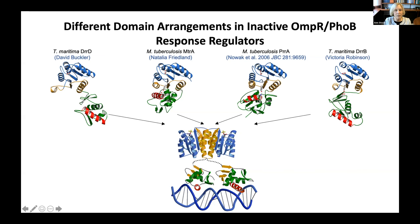Where interfaces exist, they all involve the alpha-4, beta-5, alpha-5 face of the receiver domain, but the surface interacts with different surfaces of the DNA binding domains. Interestingly, in proteins with interfaces, the interdomain interaction is stabilized by a hydrogen bond forming a latch between the conserved tyrosine switch residue in the receiver domain and either an aspartate or an asparagine in the DNA binding domain. However, because of the different orientations of the DNA binding domain, it is a different residue that partners with the conserved tyrosine in each protein, located on a different element of secondary structure. We hypothesize that the different domain arrangements provide different levels of basal transcription activity and that different domain interface arrangements provide different strength switches between off and on states, optimized for the specific needs of individual regulatory pathways.